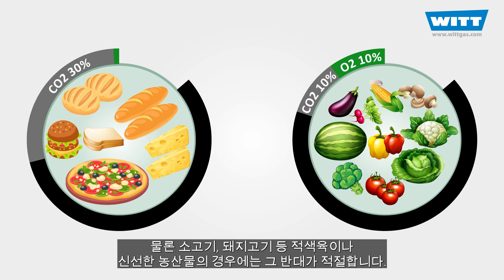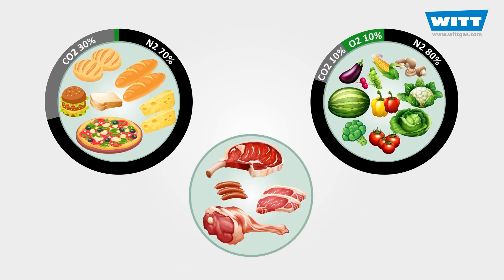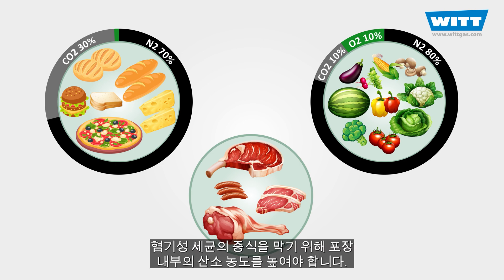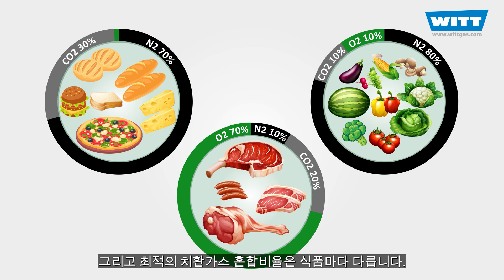In special cases such as packing red meat and fresh produce the opposite is correct — we do not eliminate the oxygen but instead increase its concentration to prevent anaerobic growth. MAP therefore normally requires a mixture of at least two gases, and the optimum proportions vary from product to product.